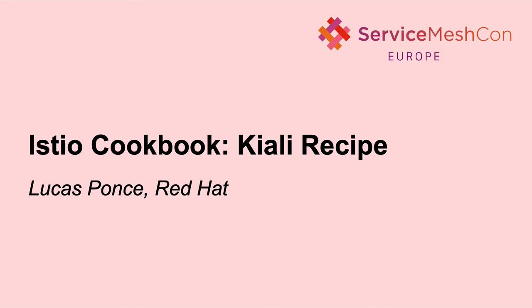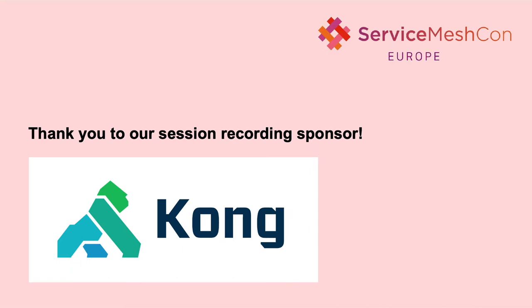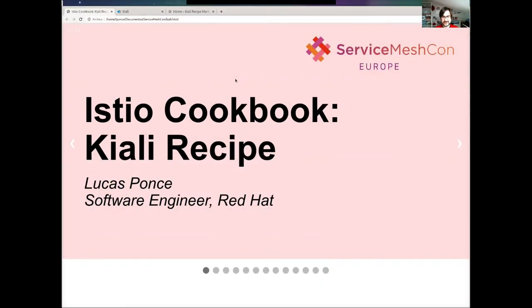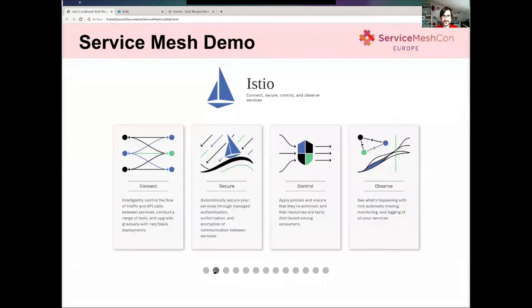Hello everyone. My name is Lucas Ponce. I'm a software engineer at RedCut and one of the developers of the Kiali project. In this session, we are going to demo how to use the Istio service mesh from a visual perspective using Kiali. Service mesh provides rich features to add advanced traffic routing, advanced security and authorization control, and also increases observability by adding telemetry and tracing signals on top of your Kubernetes cluster.